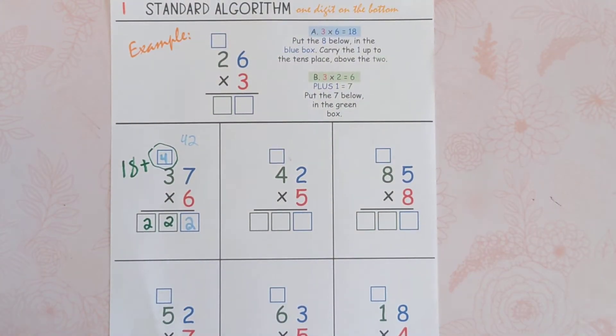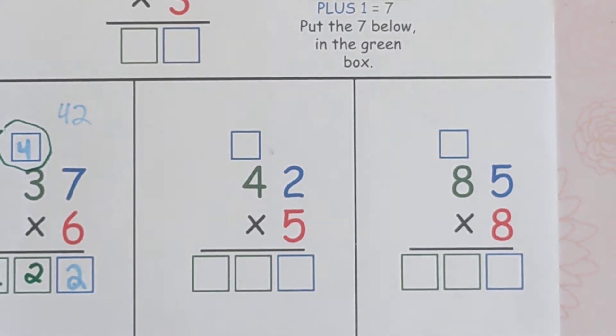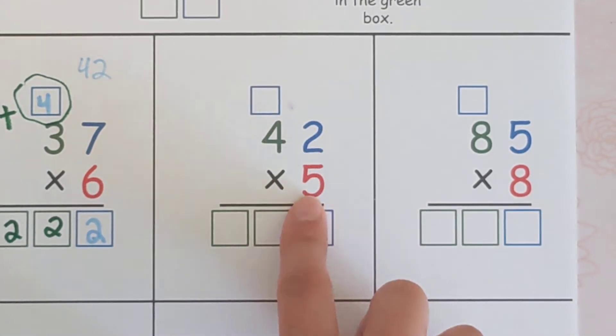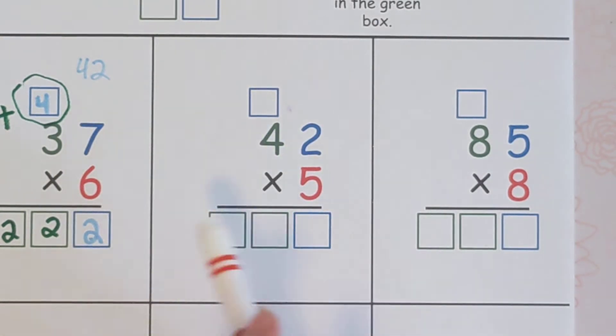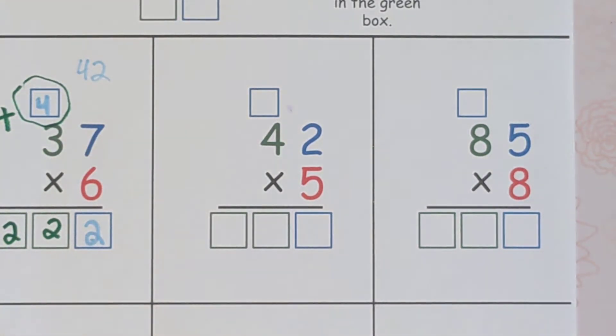But let's go ahead and get started. This is the standard algorithm. Two digits on top, one digit on the bottom. And these boxes will help you check that you didn't miss anything because your final answer will have three digits and then there's one digit up here that you'll carry. So this kind of helps guide us through as we're learning.